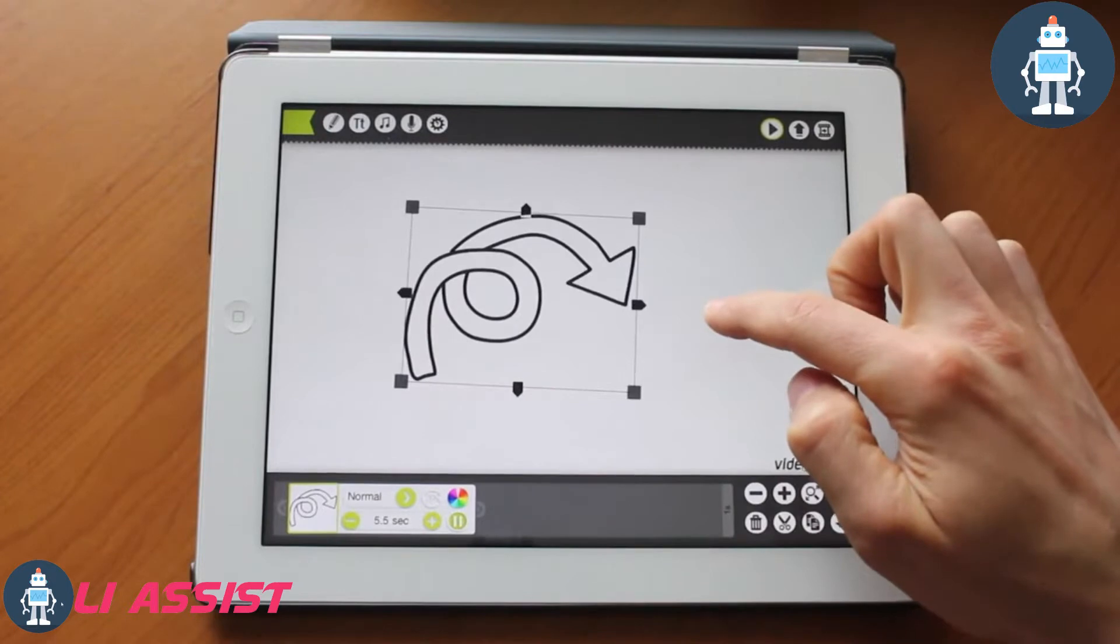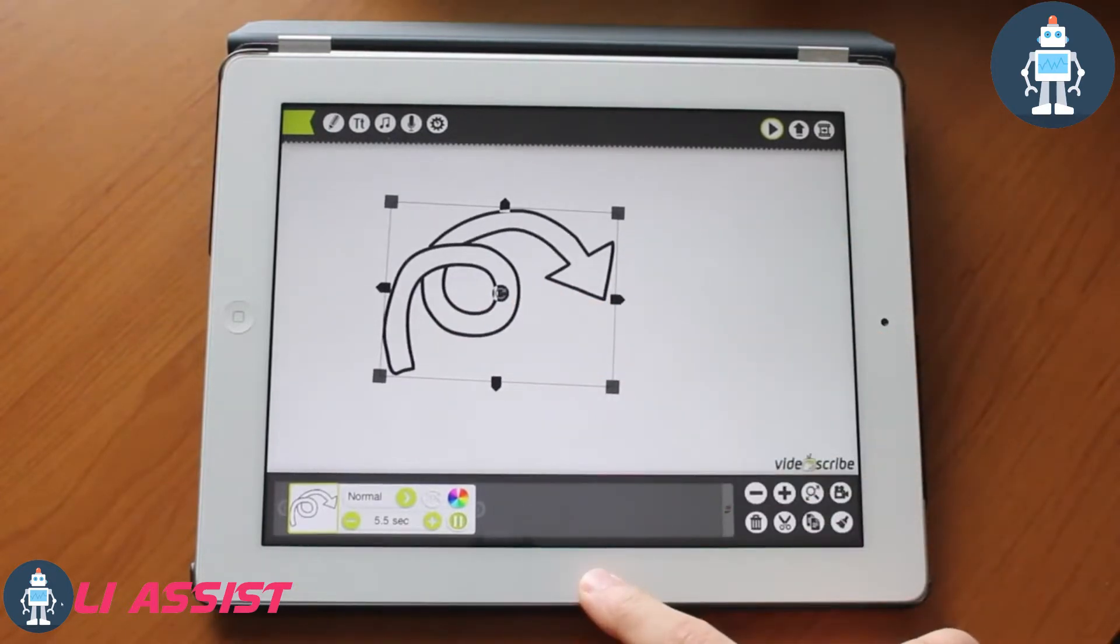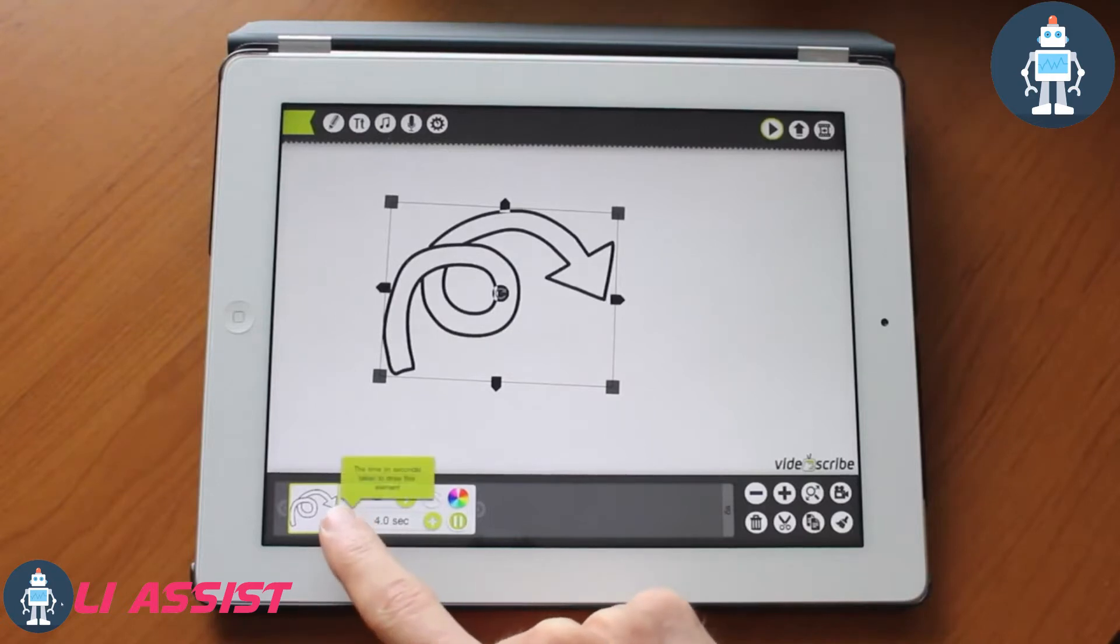At the bottom over here you have your timeline. This is where you will see your objects in the order that you will place them. In the actual object selection, you have the option to choose how long it takes for the hands to draw out your objects. We are going to go ahead and say four seconds.